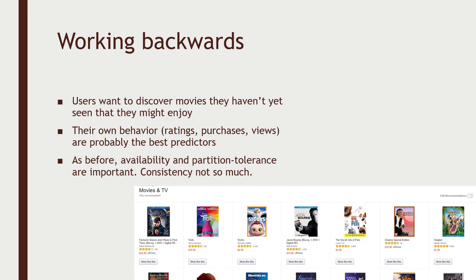Let's start by working backwards. What does the end user actually want to see? That's the one thing that's really non-negotiable. Well, they want to discover movies that they haven't yet seen that they might enjoy. That's a very vague statement, but that's really all the customer knows about the problem. That's how they think about it. So sometimes you need to innovate on behalf of the customer and figure out creative ways of giving them what they don't even know they want.